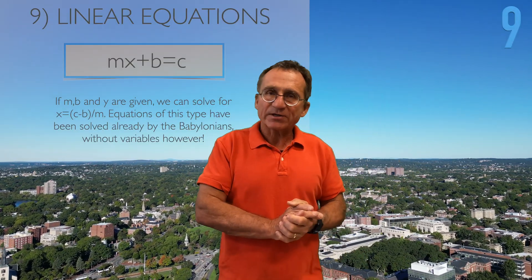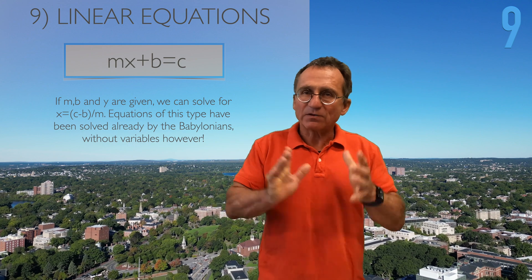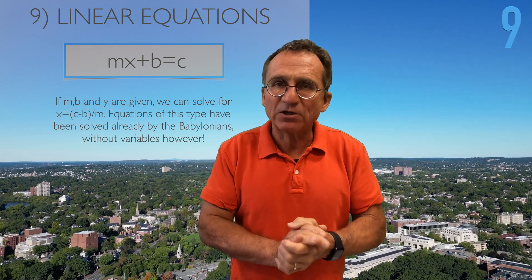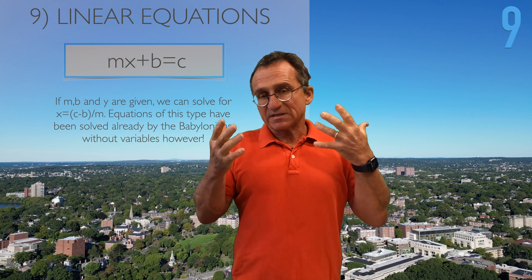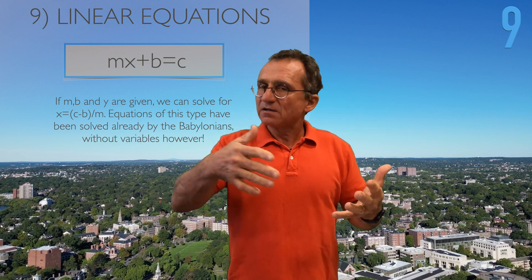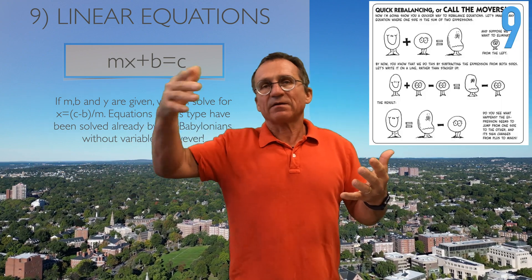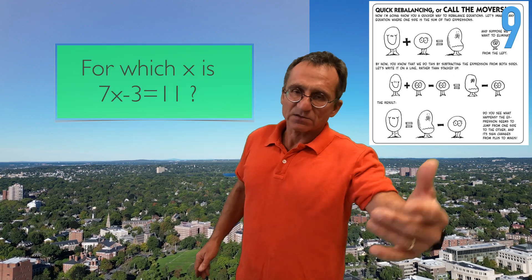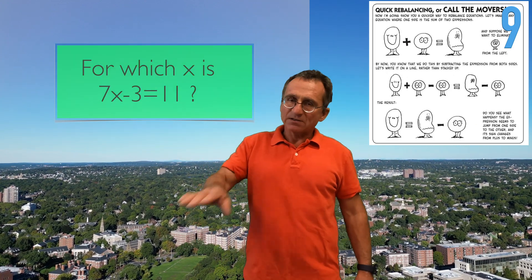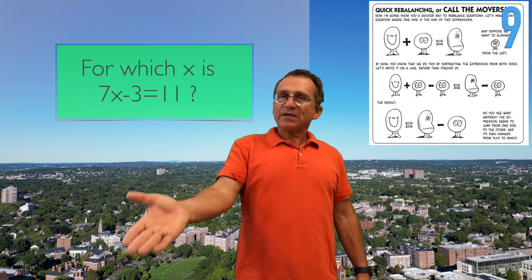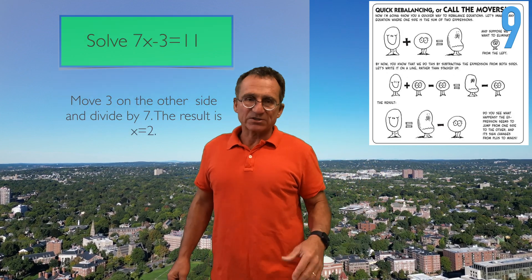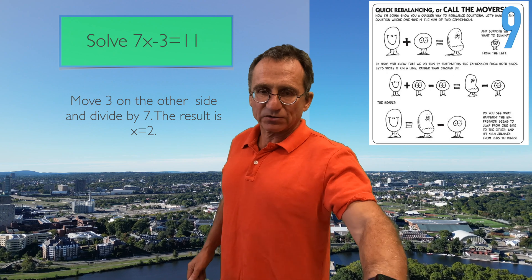Skill number 9: linear equations. We don't look at systems of linear equations here — just a single linear equation, something the Babylonians have solved. Here's an example: for which x is 7x minus 3 equal to 11? You take the 3 to the other side, get 14 divided by 7 equals 2, so x equals 2.